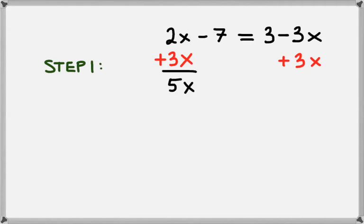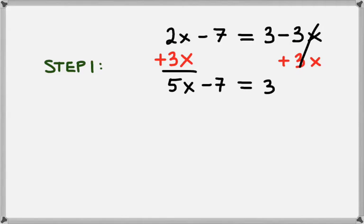On the left hand side, that gives us 2x plus 3x, which is 5x, and we're left with the minus 7 still. On the right hand side, the minus 3x and the 3x are going to cancel, so we're just left with 3. Now you can see that we've reduced this to a two-step equation like the ones from the previous lesson.